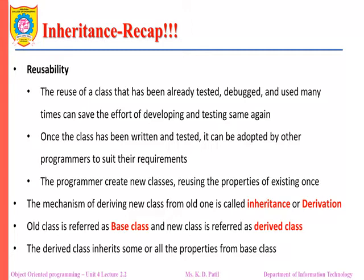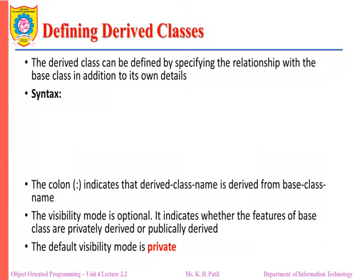The old class is referred to as the base class and the new class is referred to as the derived class. The derived class inherits some or all the properties from the base class. It is not necessary that all properties from the base class are inherited — it may happen that the derived class inherits only some properties from the base class.